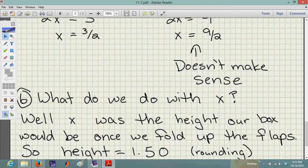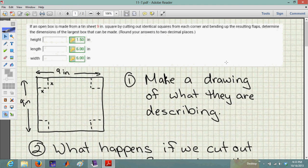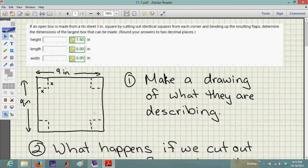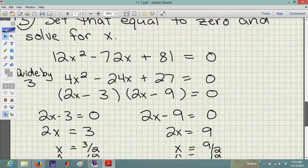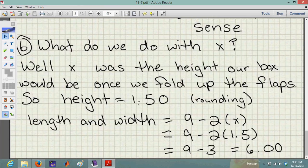What do we do with x? x was the height of our box, so we've got one of our answers right now. Remember when we looked at the picture up here, x was the height of the box. When we fold those flaps up, x tells us the height. They're asking us for the height here. My height is 3 halves, right here. So I'm going to put it in decimal form, round to two places, two decimal places. That's 1.5.